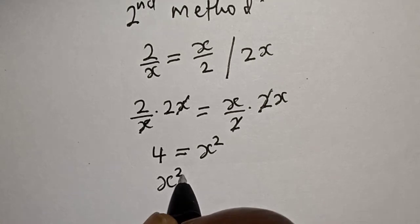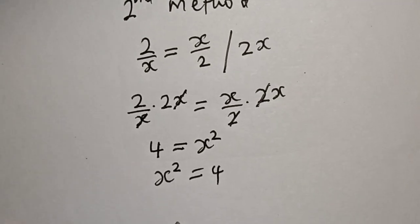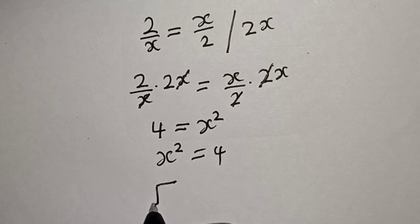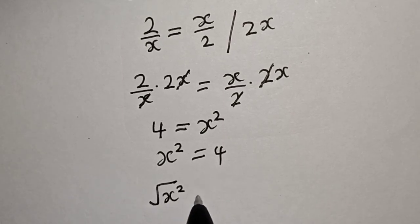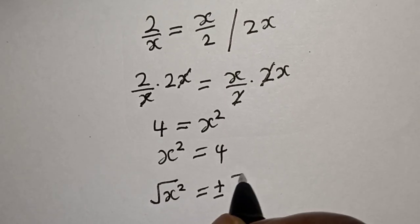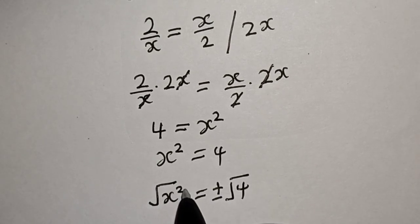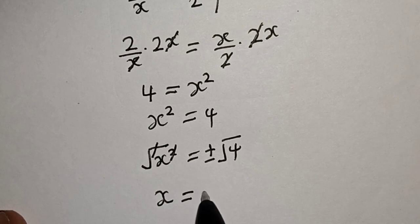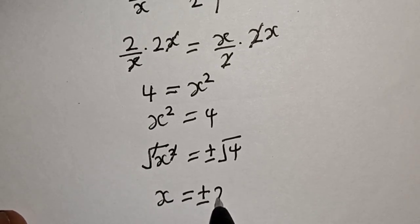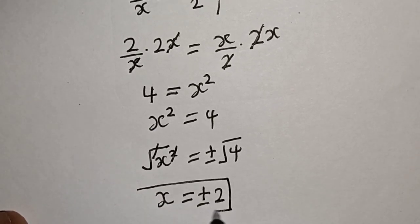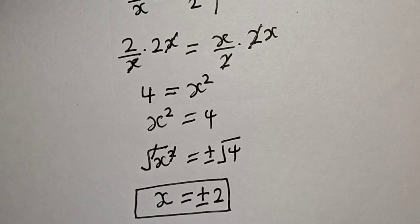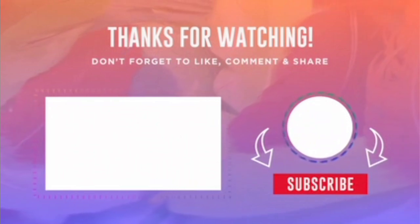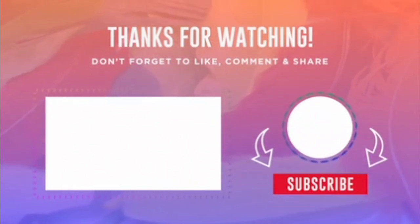Rearranging, we have x squared is equal to 4. Taking the square root of both sides: x is equal to plus or minus 2. That is our final answer for the second method — and the first method as well. If you enjoyed the class, please don't forget to like, share, comment, and subscribe. Thank you.